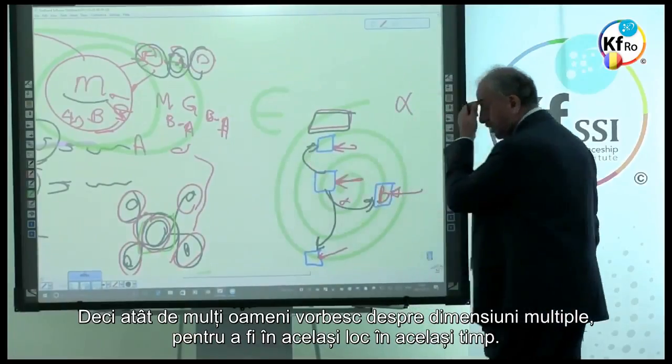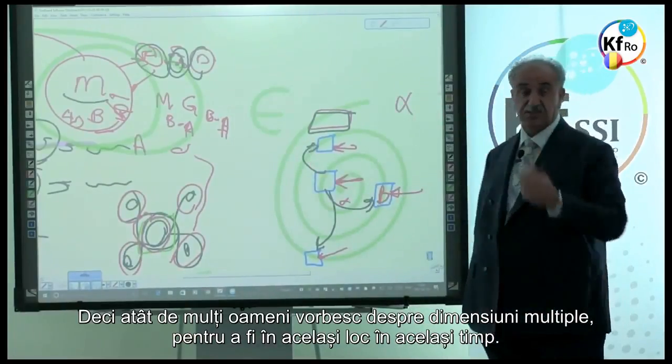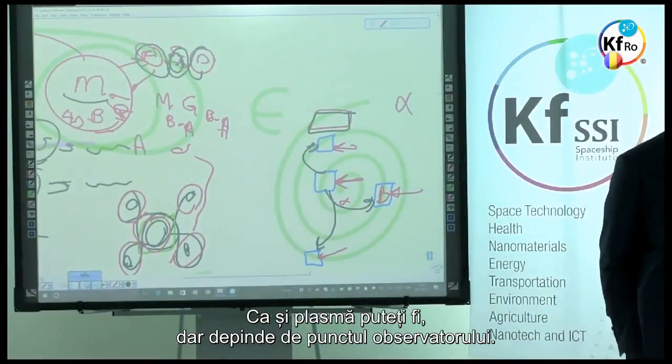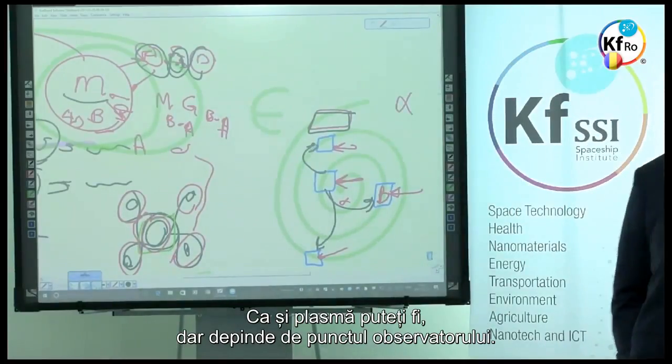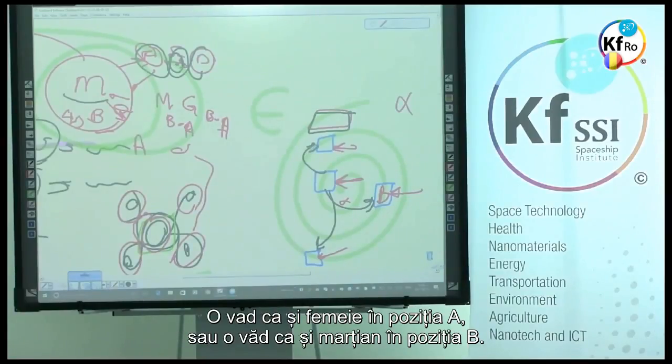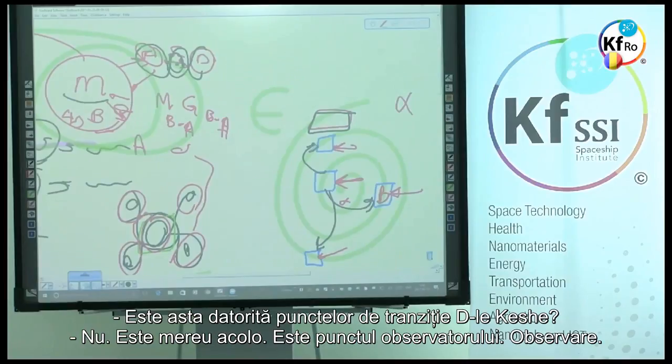So many people speak about multi-dimensions to be at the same place at the same time. As a plasma you can be, but it depends on the point of the observer. Do I see you as a human in position A and do I see you as a Martian in position B? Is that due to transition points, Mr. Keshe? No, it's always there. It's a point of observer, observation.